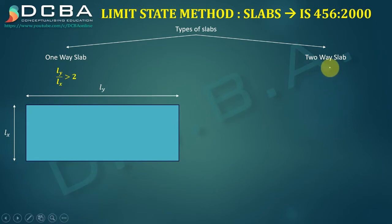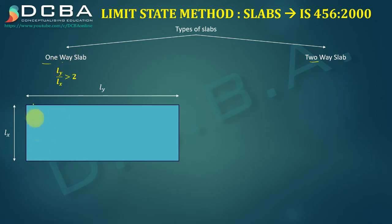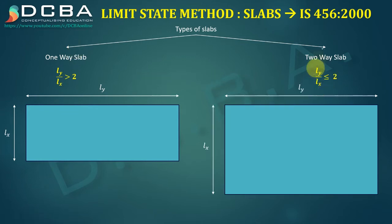There are two types of slabs: one-way slab and two-way slab. The major distinguishing criterion is the ratio of long span to short span. When LY divided by LX is greater than 2, it is called a one-way slab. If LY by LX is less than or equal to 2, it is called a two-way slab.